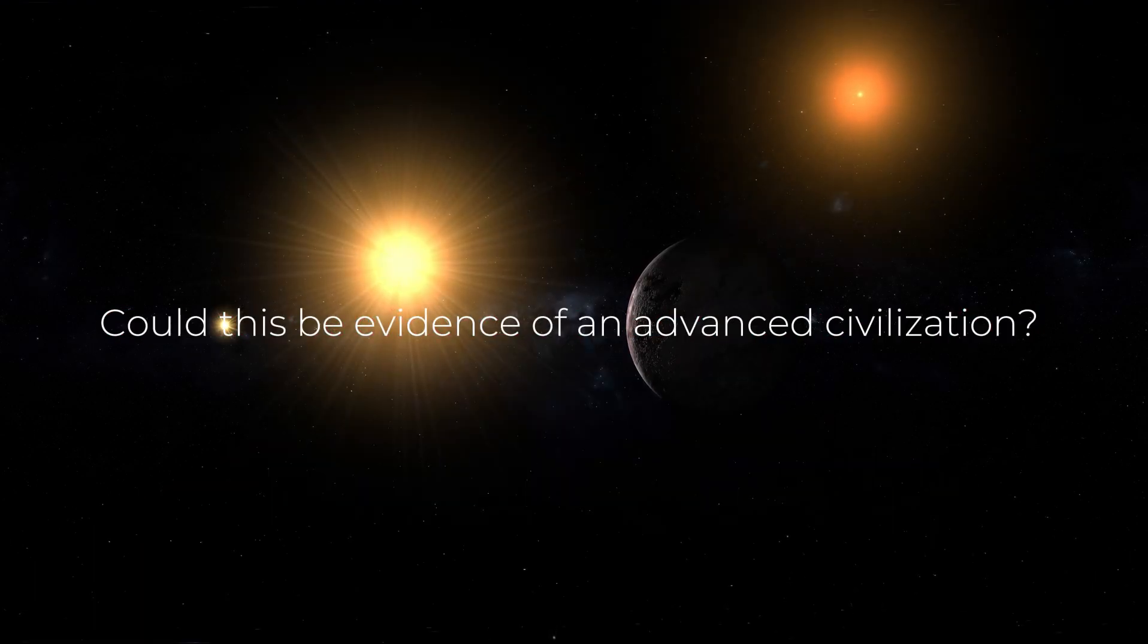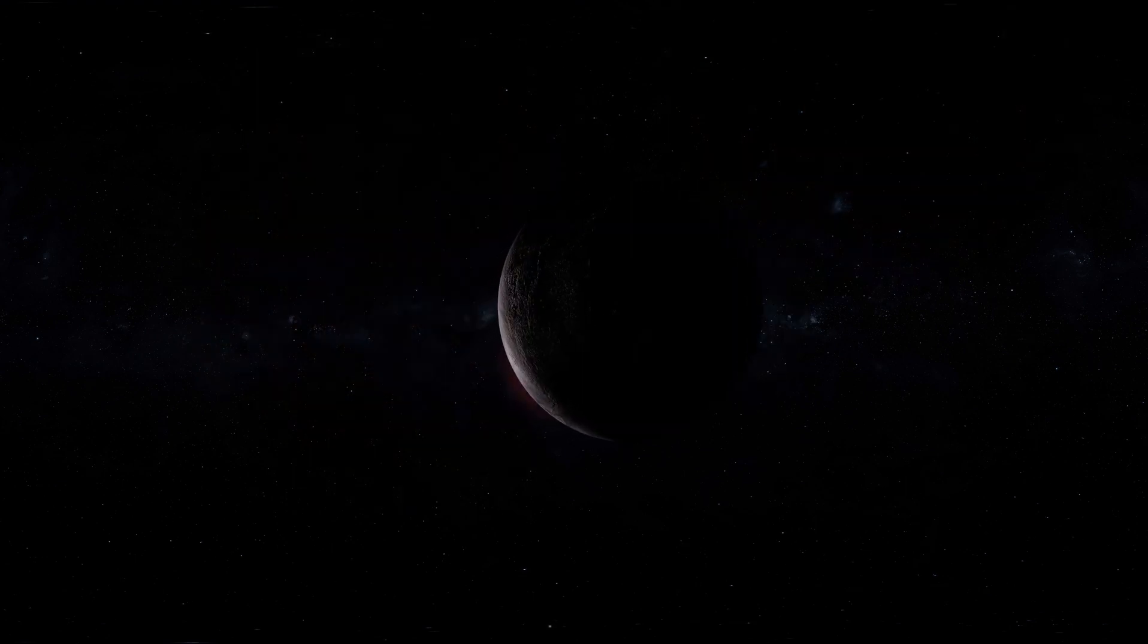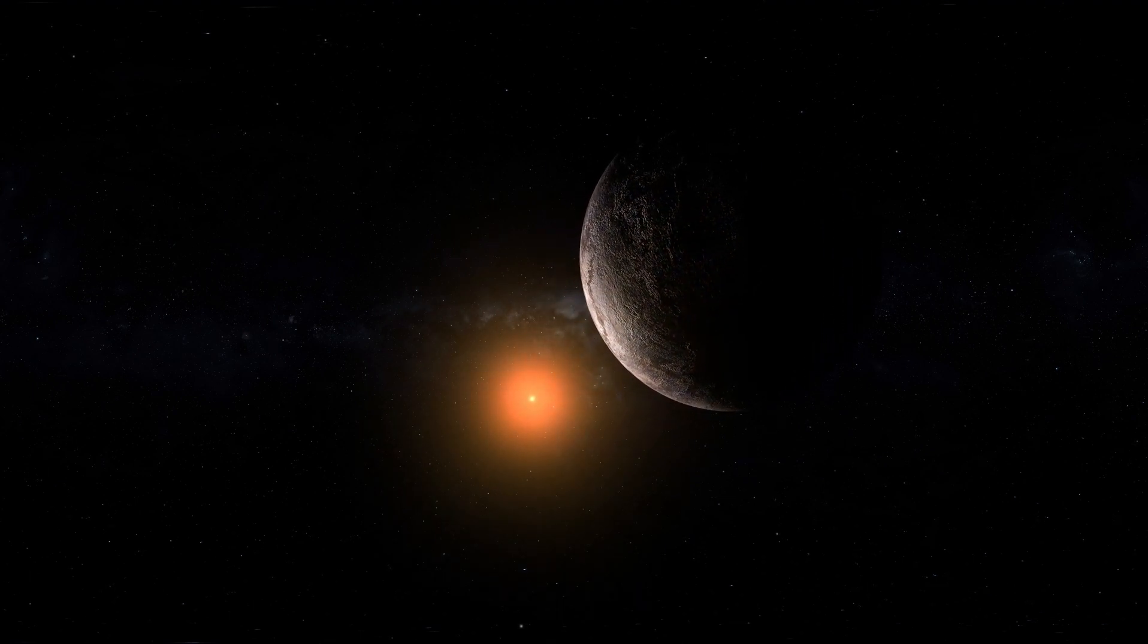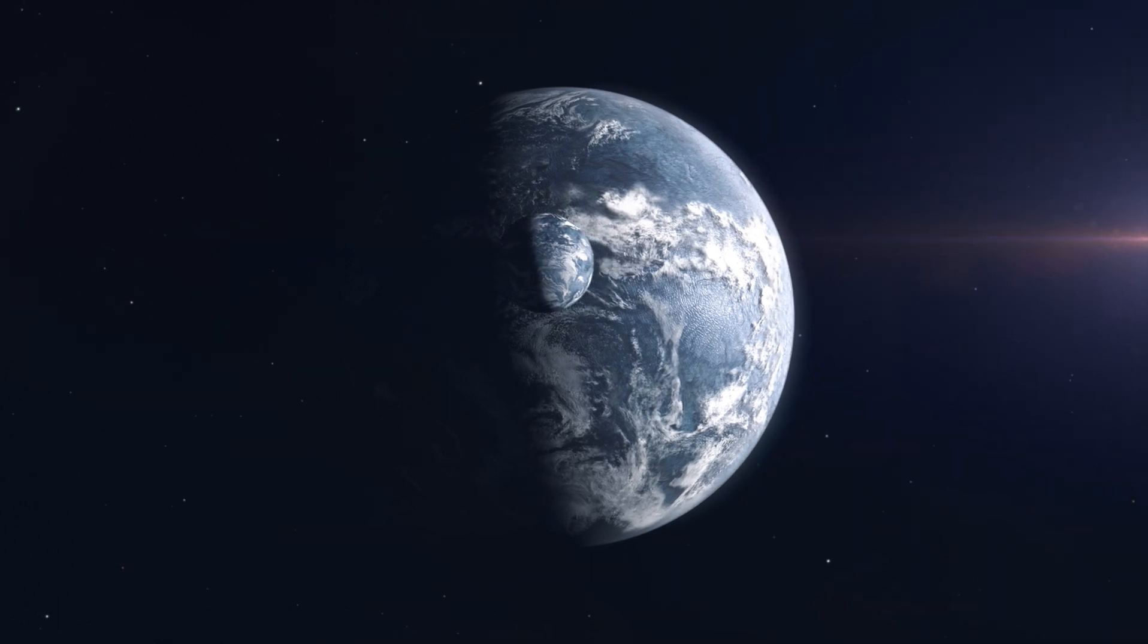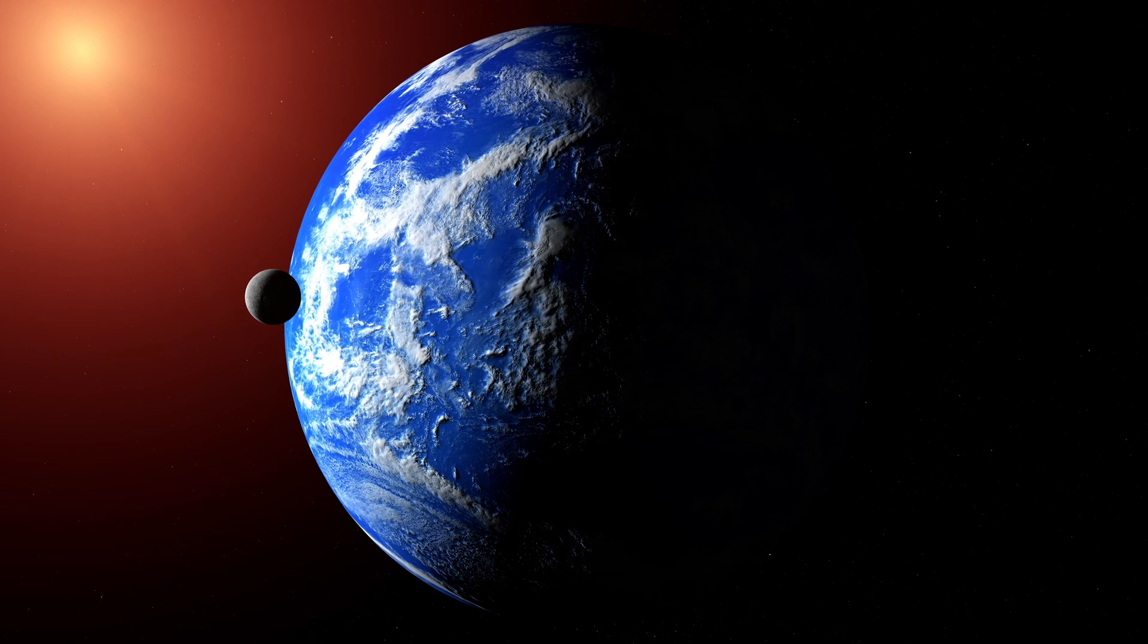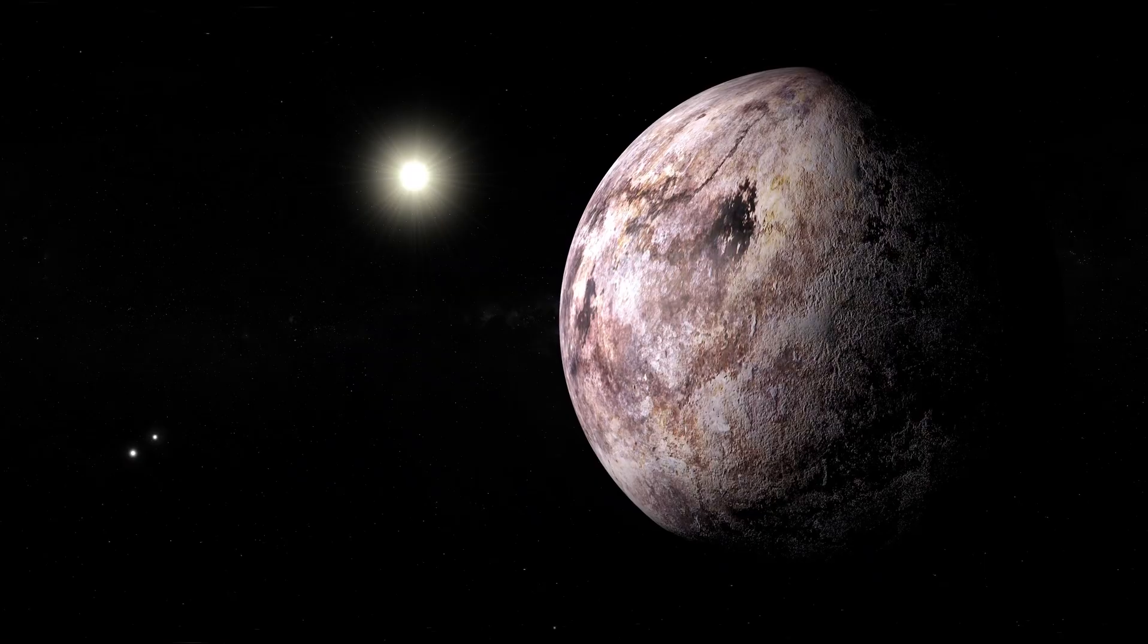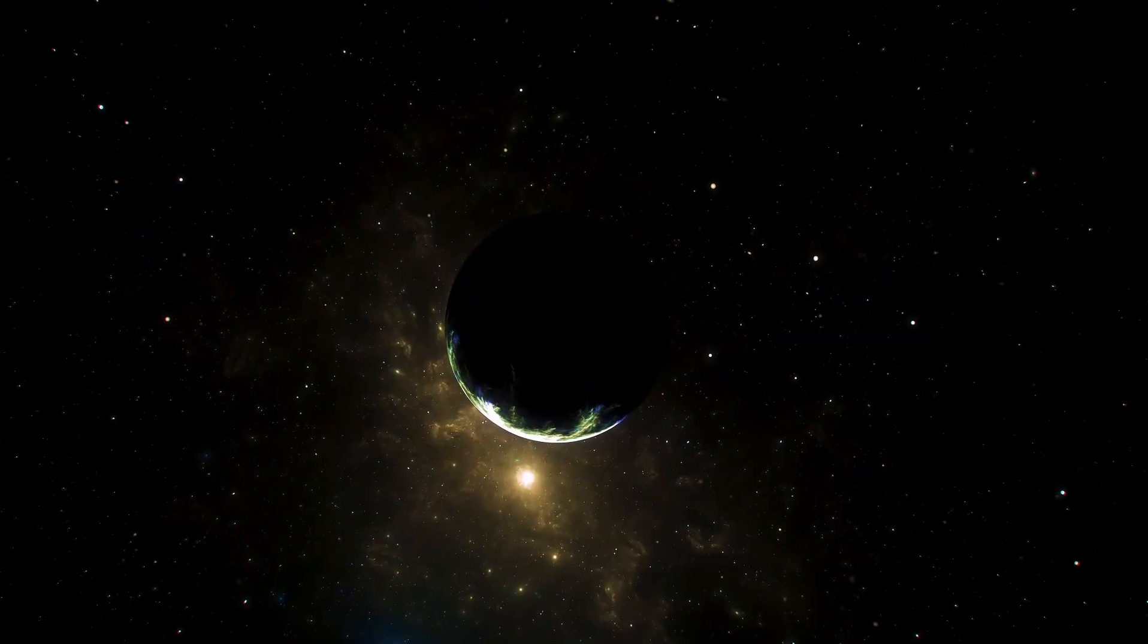Could this be evidence of an advanced civilization? While it is too early to jump to conclusions, the idea that we might have found signs of intelligent life is hard to ignore. After all, artificial lights are one of the few things we associate with developed civilizations, like seeing Earth from space. So, if Proxima B really does have something similar going on, we might be looking at our first real clue that we are not alone in the universe.